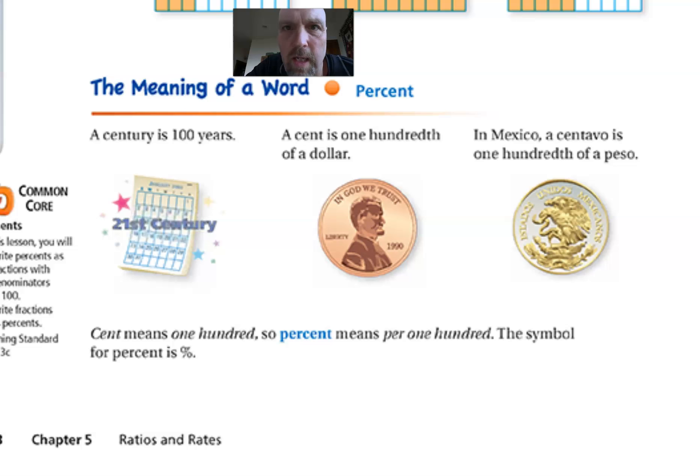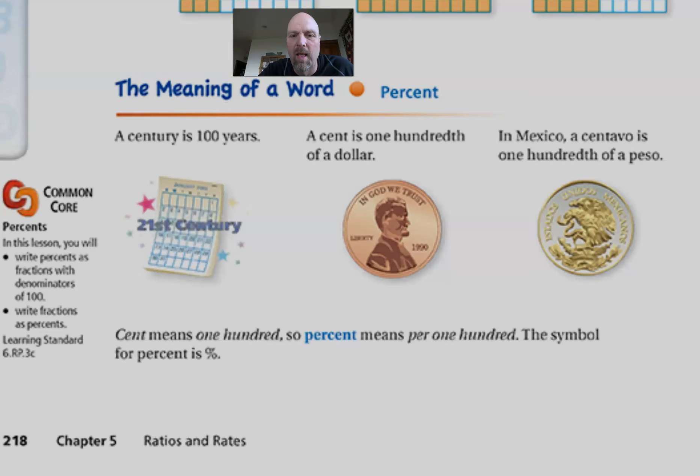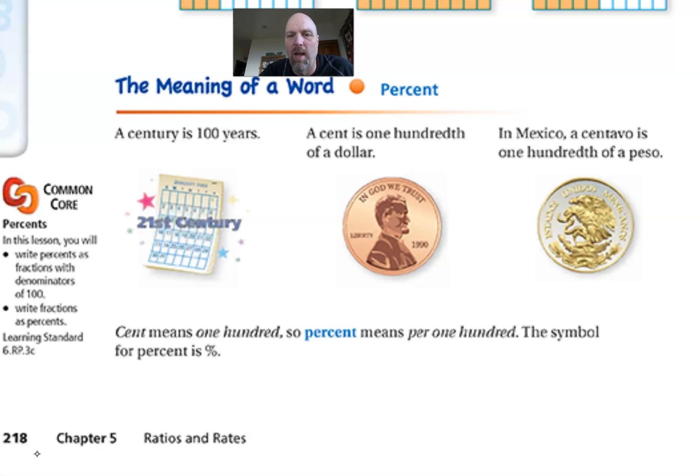So I got a joke for you. What's a teacher's favorite vowel? It's O, and I'm about to give you a big fat O right here. What does percent mean? Percent means right down here, per 100, per out of, divided by 100. A century is 100 years, cent, a cent, like one cent, one penny, is one hundredth.